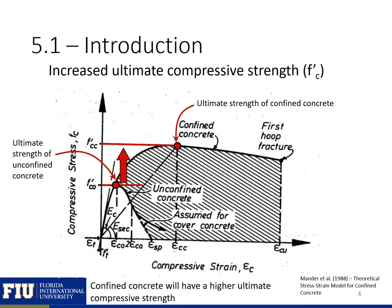First, we can see that confinement is going to have a large effect on the ultimate strength of our concrete. I highlighted the ultimate strength of our unconfined concrete versus the ultimate strength of our confined concrete, and we can see that the confined concrete ultimate strength is substantially higher than the unconfined concrete strength. How much higher will depend on the type and amount of confinement reinforcement provided.